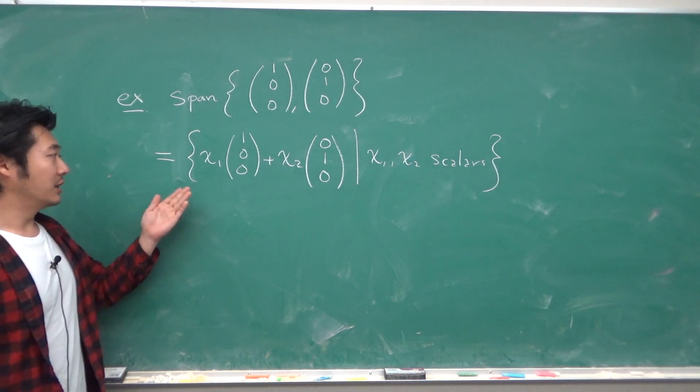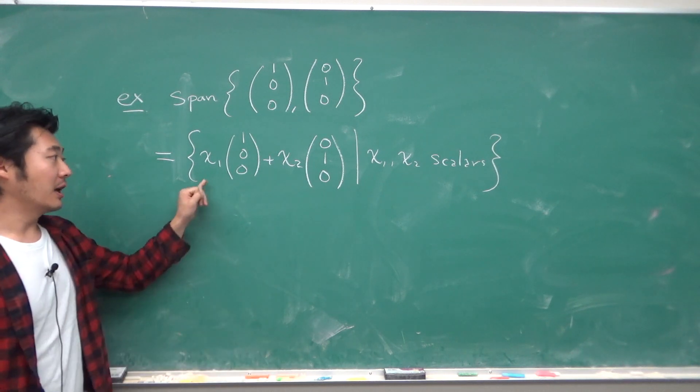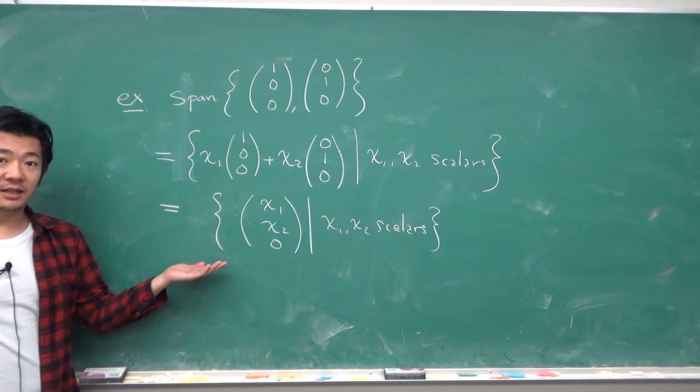where we have the linear combination of the vector 1, 0, 0, and 0, 1, 0, and x1 and x2 are any scalars. Adding them up, we get something like this.